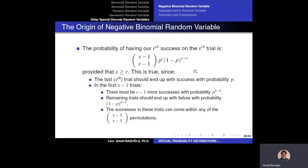To develop the probability mass function, if you want to observe the r-th success on trial x, then there should be exactly r successes in x trials, and x minus r of them must be failures. In x trials, observing r successes and x minus r failures gives probability p to the power r times (1 minus p) to the power (x minus r).